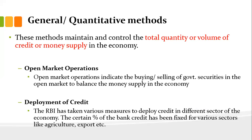Another method is deployment of credit. RBI has taken various measures to deploy credit in different sectors of the economy. A certain percentage of bank credit is fixed for various priority sectors. For example, in the agriculture sector the interest rate is very low, and farmers can get loans at cheaper rates. The government identifies sectors that need more emphasis and provides easy credit to them so the economy runs properly, since agriculture is the primary sector and the backbone of all secondary and tertiary sectors.